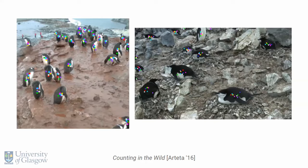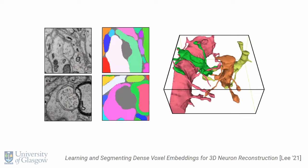If I want to count penguins in a photograph, I can train a neural network for penguin density estimation. Or if I want to predict the 3D shapes of neurons in an electron microscopy stack, I train a neural network for that task. So we have all these very impressive results, but they all come from supervised learning — in other words, they rely on having a large dataset of annotated data.